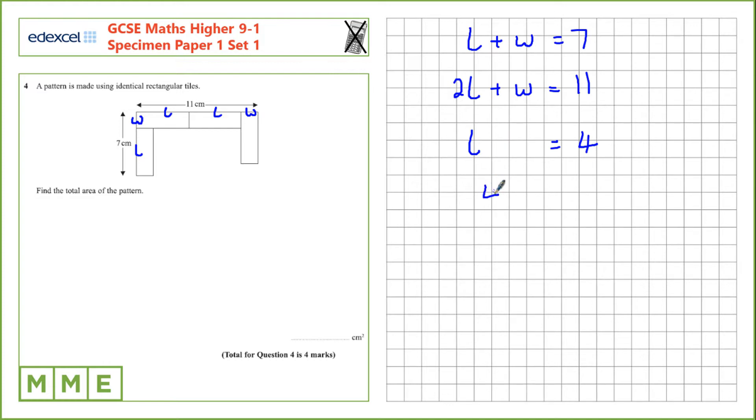And from this equation here, 4 plus W equals 7. So W must be 7 take away 4, which is 3. If you want the total area of the pattern, the area of one rectangle is 3 times 4, which is 12. But we've got four rectangles, so that's 12 times 4, which is 48 centimeters squared.